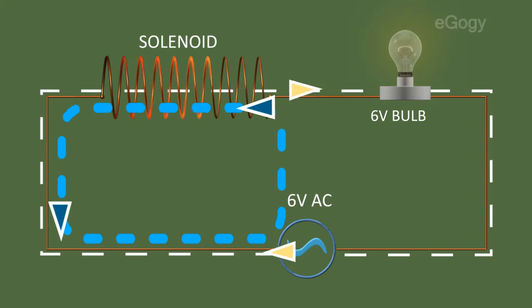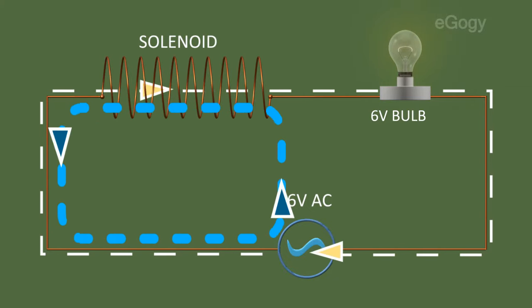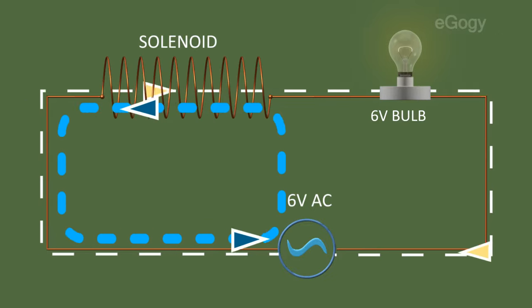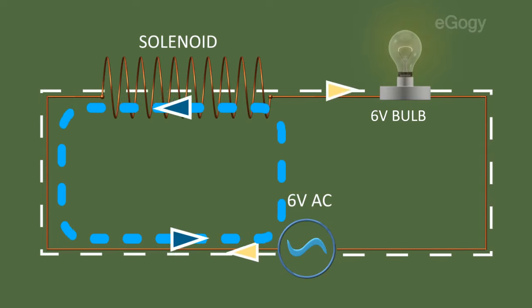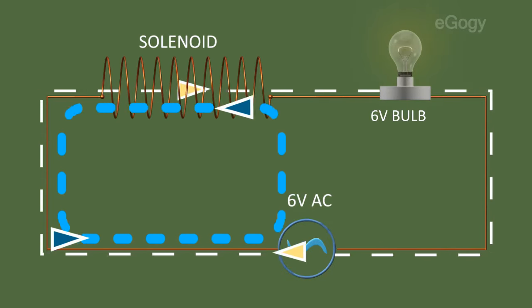Due to this, the voltage in the circuit also decreases. So the intensity of the bulb also decreases. This phenomenon is self-induction.